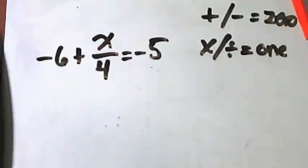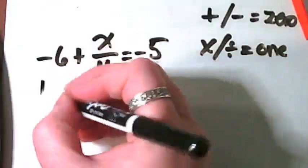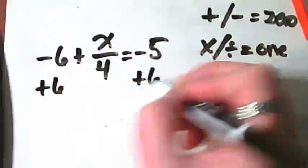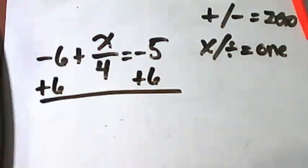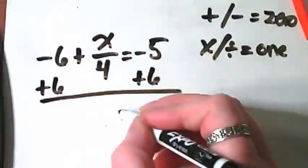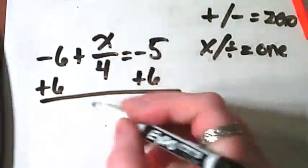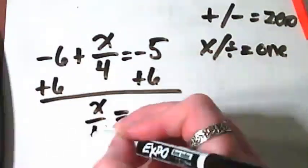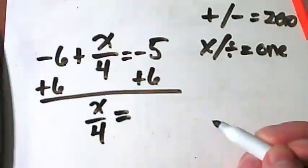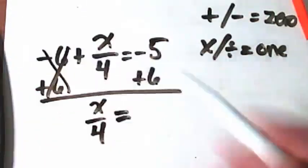Where am I looking to make a zero? With that negative six, how am I going to make it a zero? Positive six. Let's bring our equal sign down. What's left on the left side of the equal sign? Just the fraction, because this became a zero.